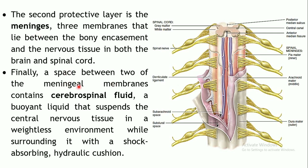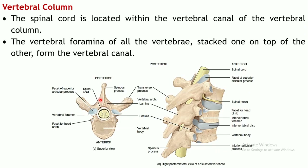Cerebrospinal fluid is a buoyant liquid which suspends the central nervous system in a weightless environment — it is a shock-absorbing liquid that acts as a cushion, giving additional protection. So there are two physical protective layers: the bony framework of the vertebral column and the meninges covering the spinal cord. The third type of protection is provided by the cushioning liquid present in between these layers.